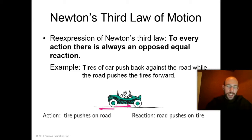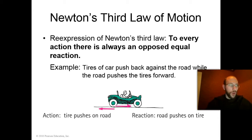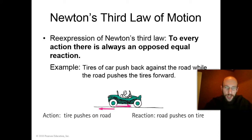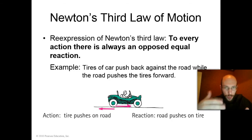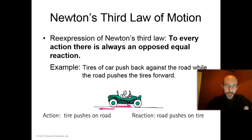Have you ever noticed that a car's tires push against the road in the direction that's opposite to the direction of the car's motion? Go take a look at a car — your parents' car, your own car — and notice how the tires roll. Or think of the way that you walk: your foot pushes backwards against the ground but you move forwards. If you're a sprinter, you push back against the blocks, but then you move forwards. What's going on here?